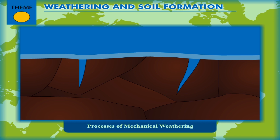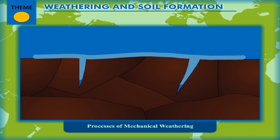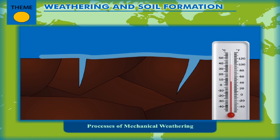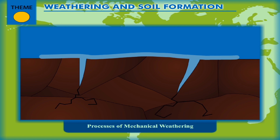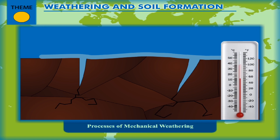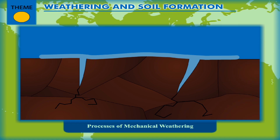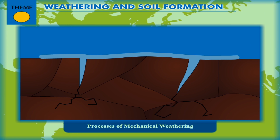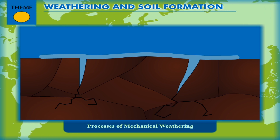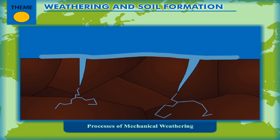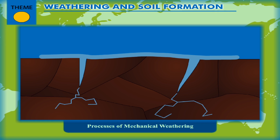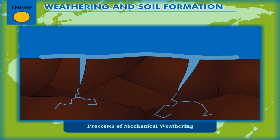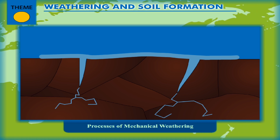Due to Frost Action: Sometimes water gets collected in the cracks in the rocks. When the temperature is low, this water freezes and expands and cracks the rocks, but when the temperature is high, the volume of water is reduced due to melting of ice. Freezing water has increased volume that exerts pressure on the rock and widens the cracks. This pressure is released when the ice melts. Continuous action causes the disintegration of the rocks. Such weathering is common in the cool and temperate climate regions.